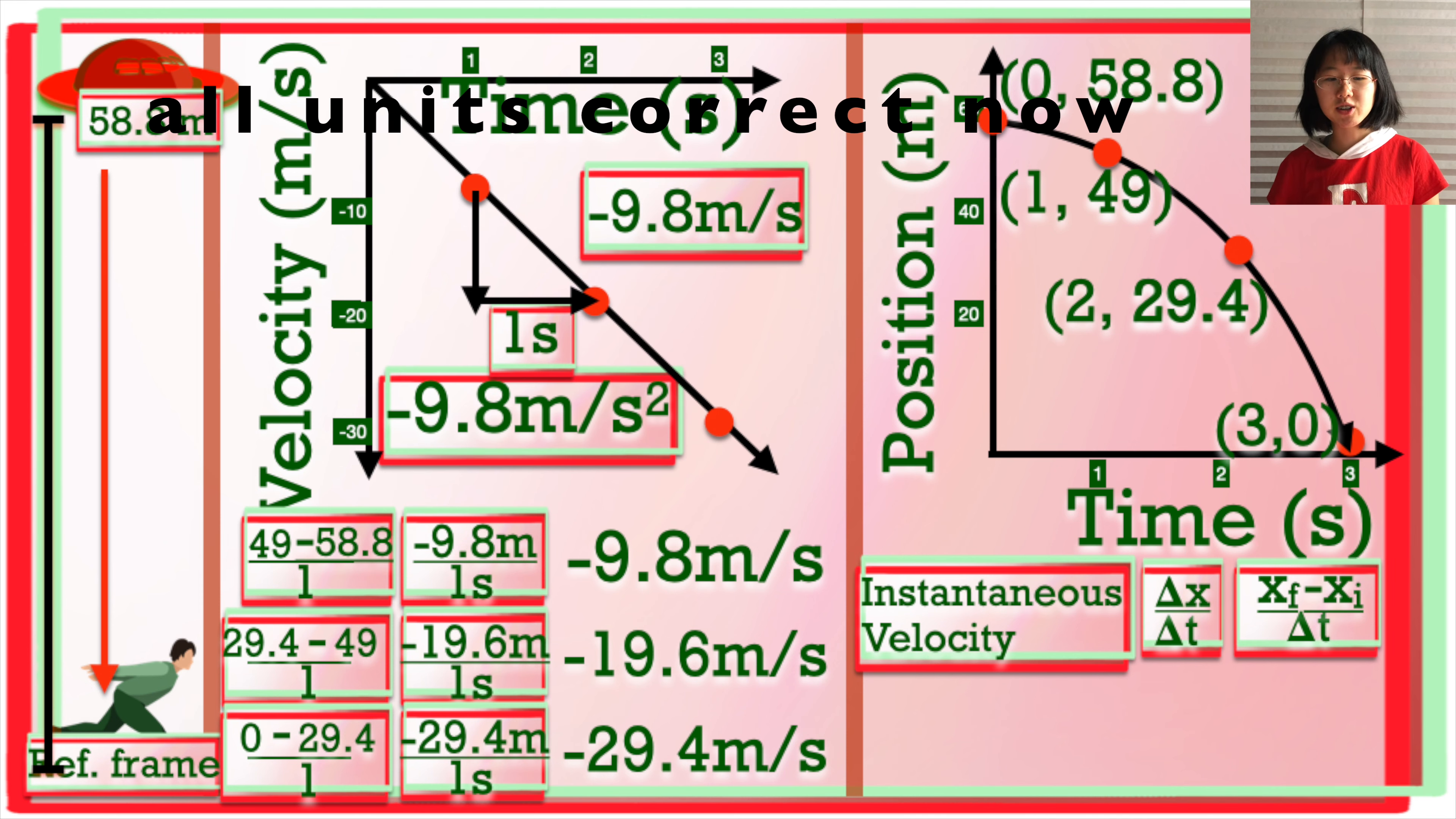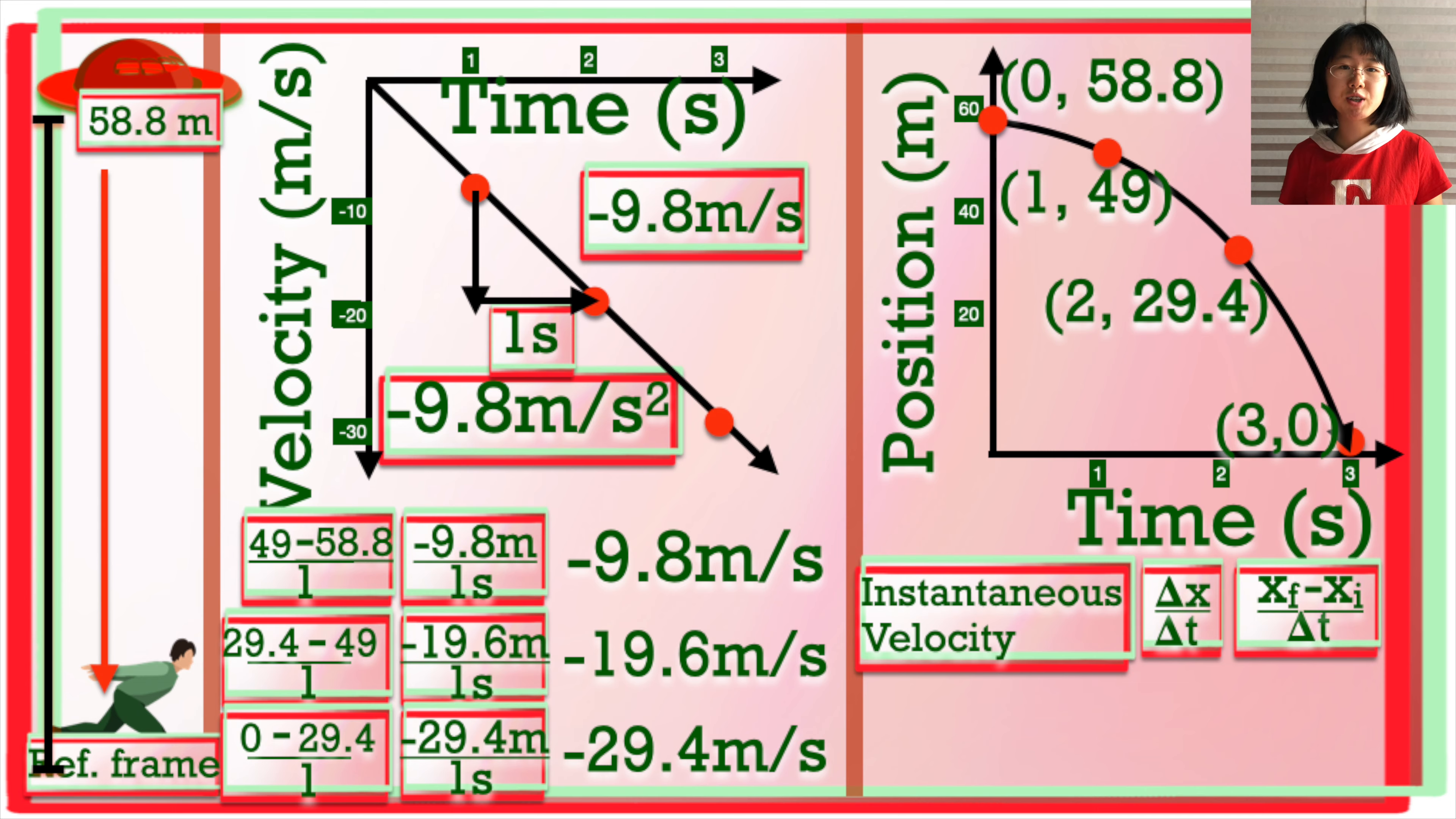So as we found out earlier, that's also the acceleration of the alien spaceship, negative 9.8 meters per second squared. So acceleration is in fact a vector quantity. That means it has both magnitude and direction. So you should keep in mind that an object can be accelerating, even if its speed stays the same. If it's changing direction, then it's considered to be accelerating.